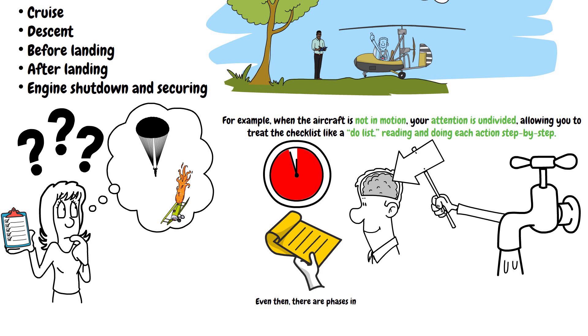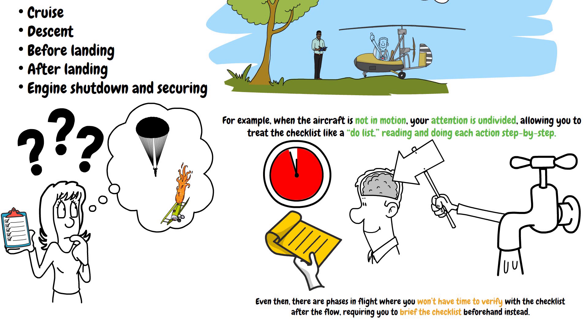When the aircraft is in motion, it is appropriate to use a flow of memory items to complete the critical tasks, then pull out the checklist afterwards to verify the completed actions when time permits. Even then, there are phases in flight where you won't have time to verify with the checklist after the flow, requiring you to brief the checklist beforehand instead.